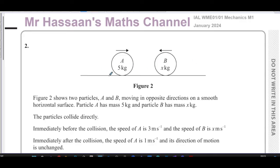We have a question here that looks like it's about momentum. Figure 2 shows two particles A and B moving in opposite directions on a smooth horizontal surface. Particle A has a mass of 5 kilograms and B has mass X kilograms.